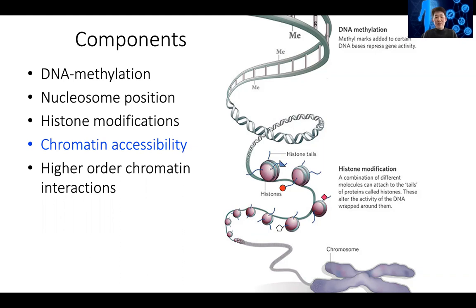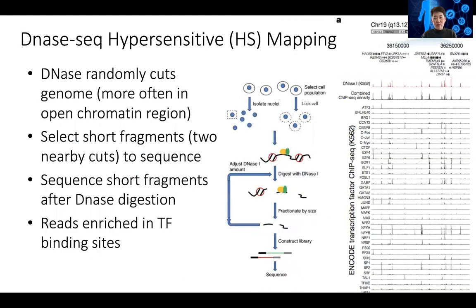Ideally, you want some kind of assay that can give you really high-resolution transcription factor binding sites. One assay that was super informative is the DNase hypersensitivity profile, or DNase-seq.